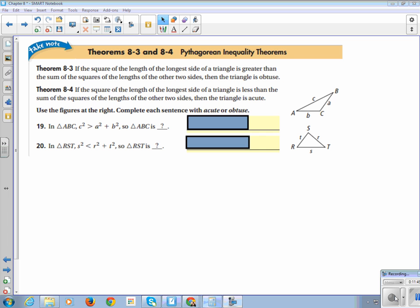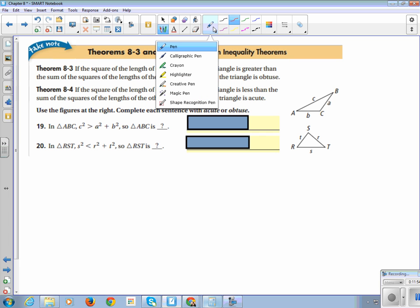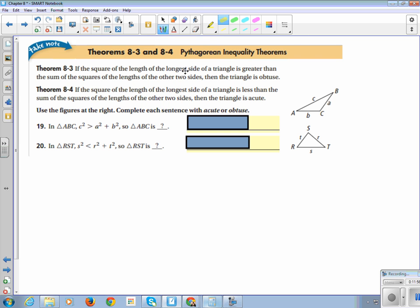Theorems 8.3 and 8.4 are Pythagorean inequality theorems. 8.3 says, if the square of the length of the longest side of a triangle is greater than the sum of the squares of the other two sides, then the triangle is obtuse.